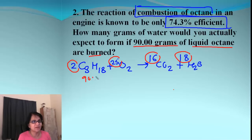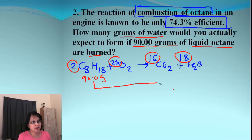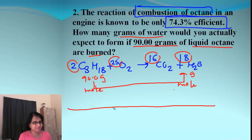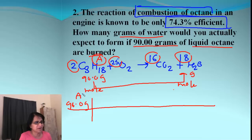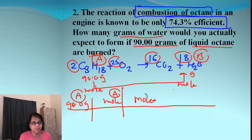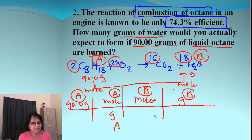We know 90.0 grams of liquid octane is burned — that's our beginning point. We are finding the yield for water produced. The roadmap goes: grams of octane → moles of octane → moles of water (mole bridge) → grams of water. In the grid, using A for octane and B for water: 90.0 grams of A, then grams of A over moles of A, then moles of A to moles of B, then moles of B to grams of B.